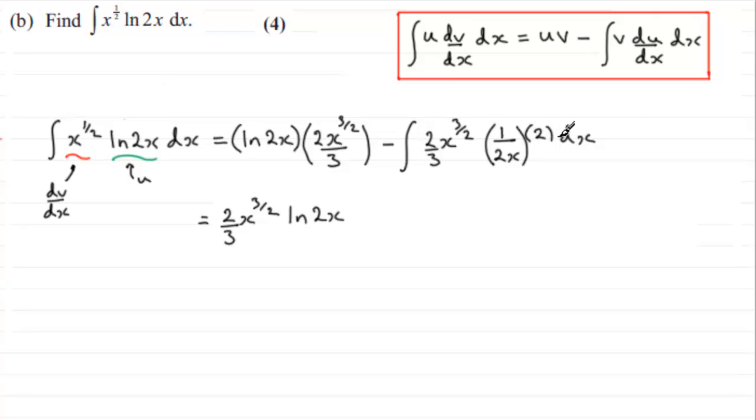For this one, let's just clean it up by canceling that two with that two there, and we can cancel the x into x to the power three over two. That's going to go one half there if we subtract the powers.